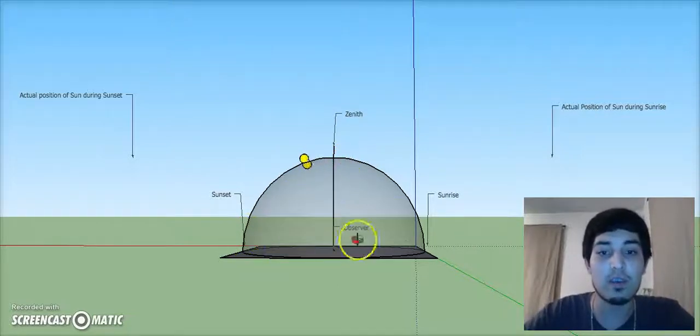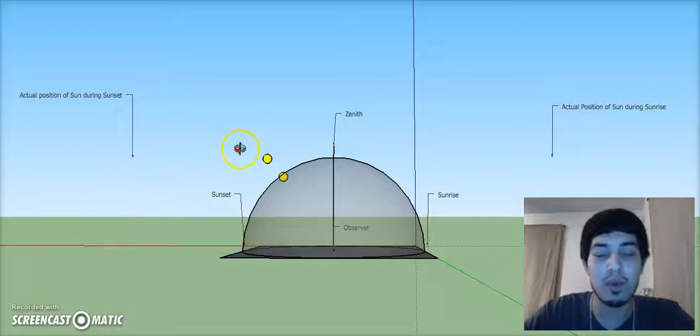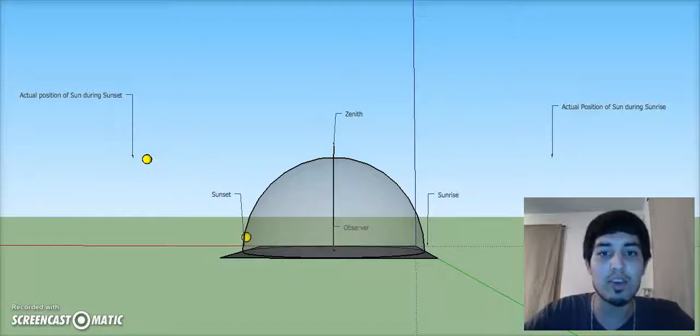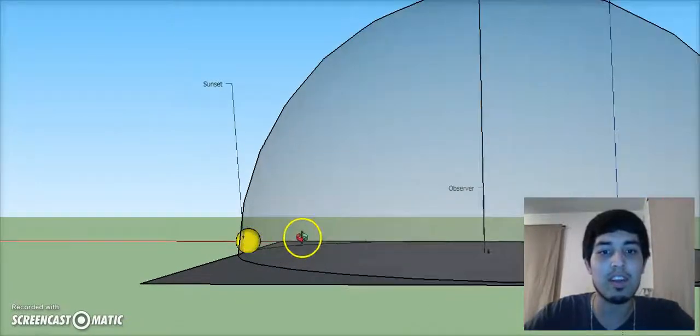And then set in the west. So this would be east, and this would be west over here as it sets, and she sees the sunset over here. Here, let me pause it. She sees the sunset down there.